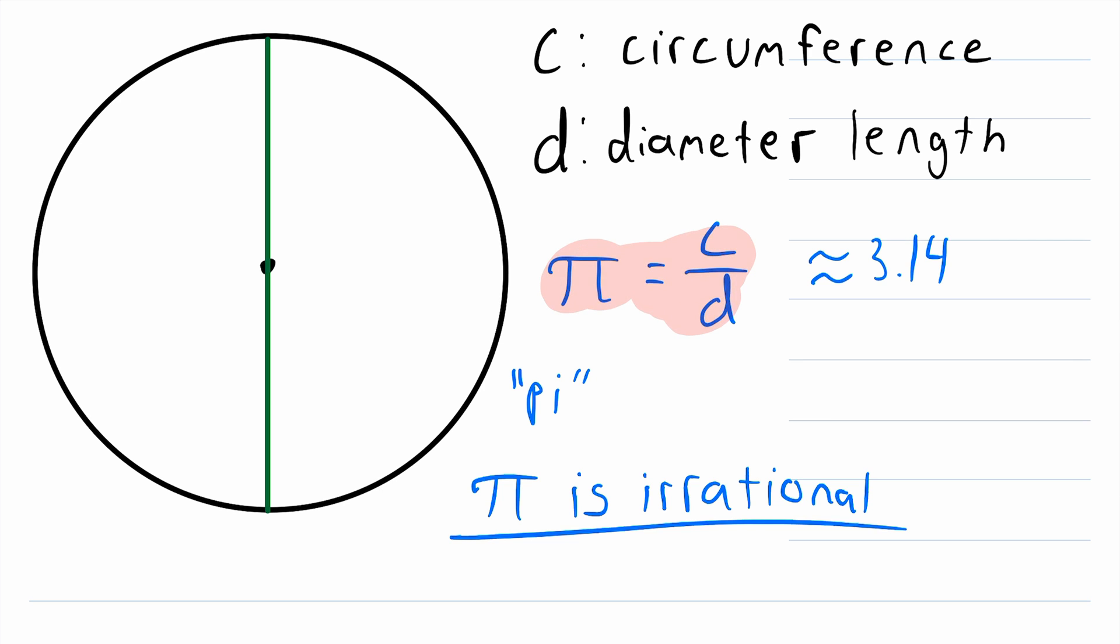Knowing this equation, that pi is equal to the circumference divided by the diameter length, is all we need in order to figure out the circumference. So what we want to do is solve this equation for C, the circumference. In order to do that, we just have to multiply both sides of this equation by D in order to get rid of this division by D.